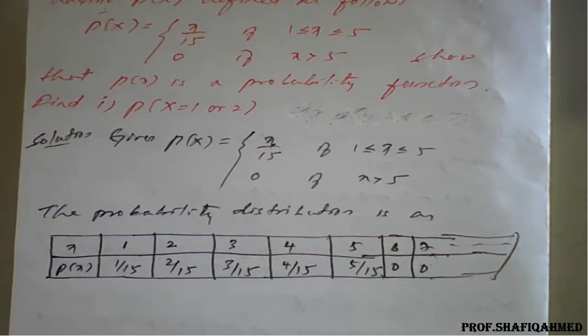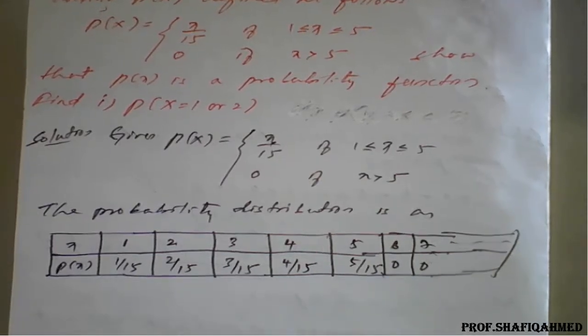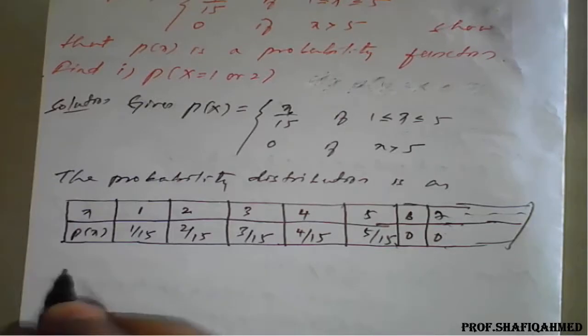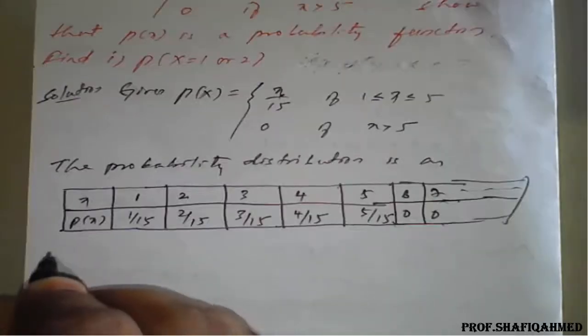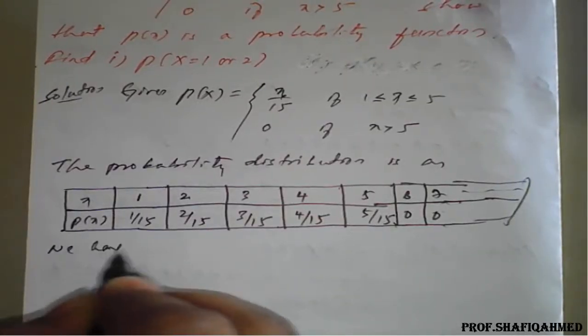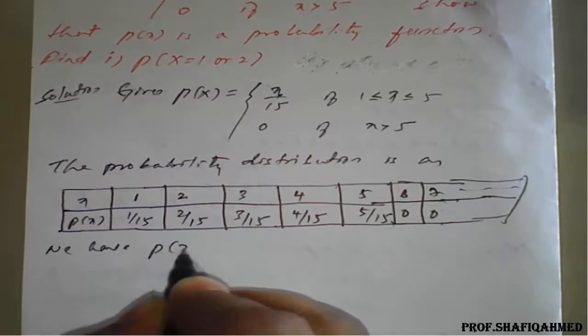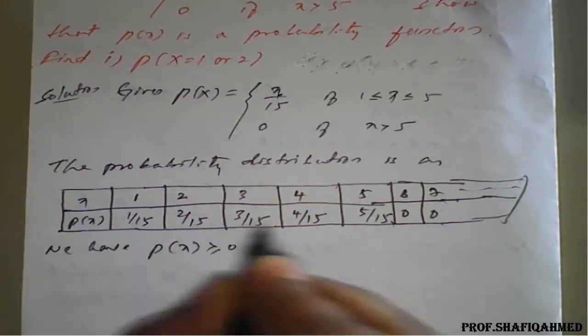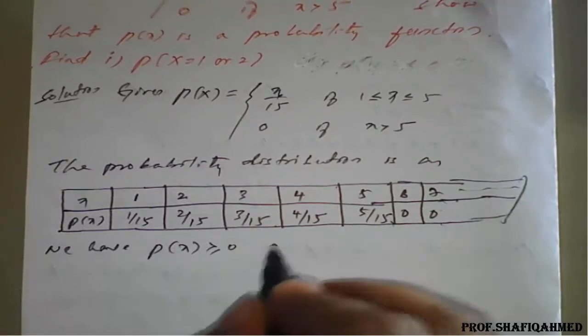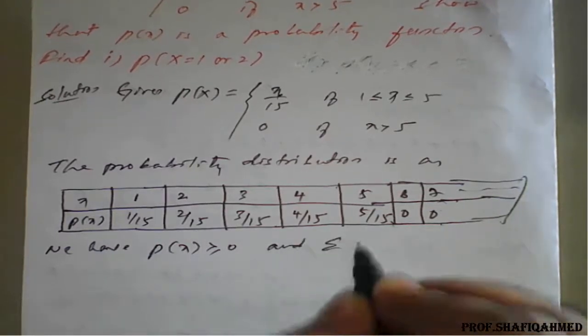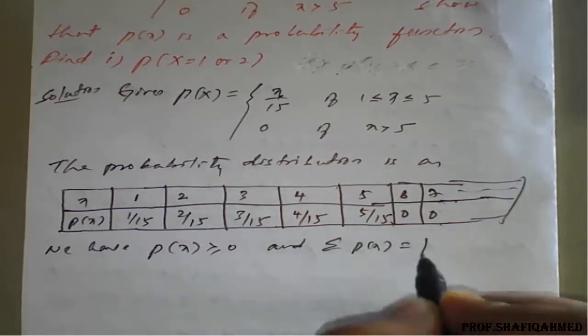With the help of this probability distribution table, we will go further. We have the conditions: P of X should be positive, check all of P of X are positive. And second condition is summation of P of X will be 1.